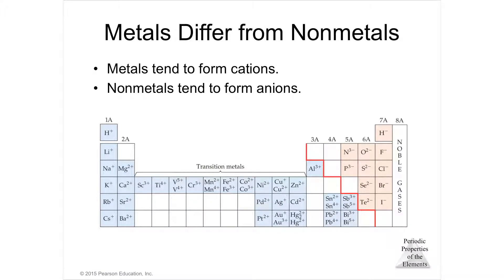Metals tend to form cations — it's easy to steal their electrons because they have low ionization energies. Non-metals tend to form anions; they have high electron affinities, so they want electrons and steal them, becoming negatively charged. Transition metals tend to have multiple possible ions they can make — sometimes two, three, or four different types, depending on which electrons are being transferred.